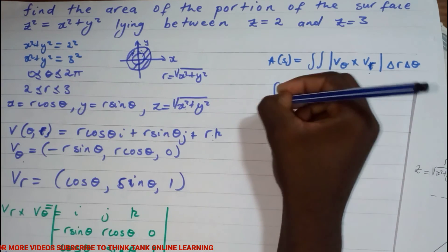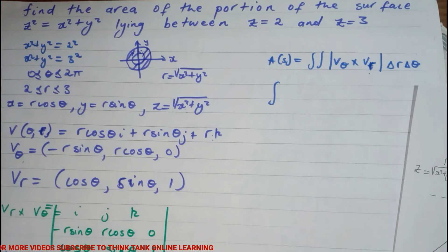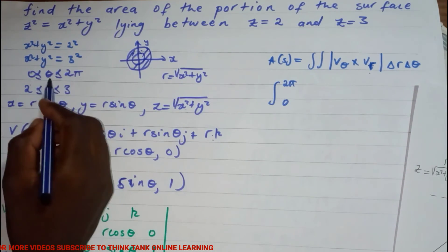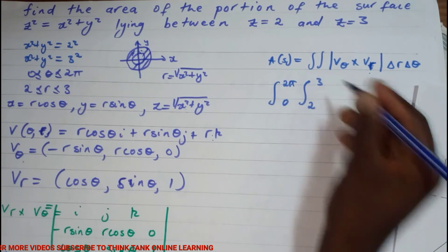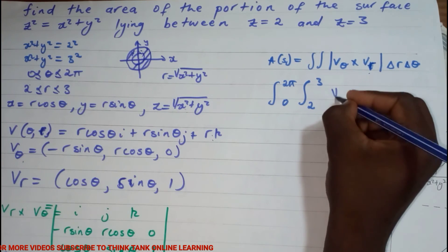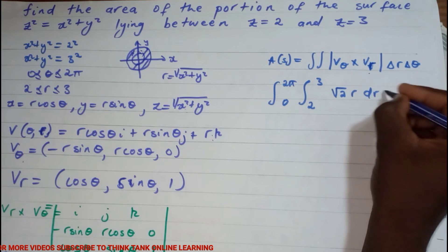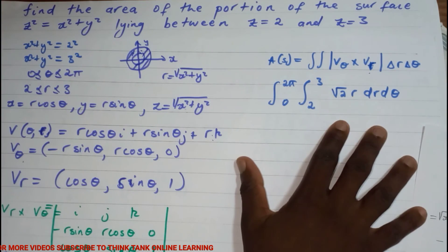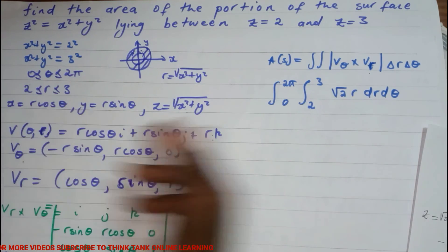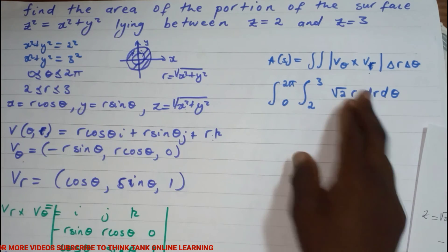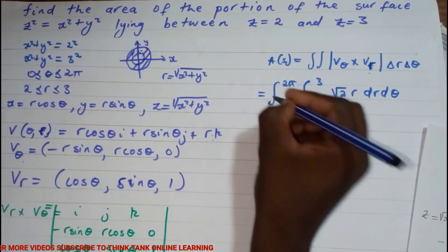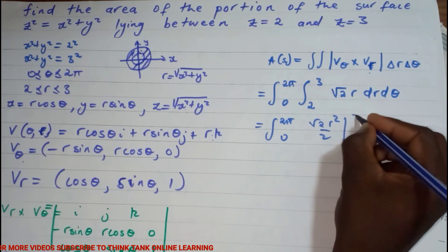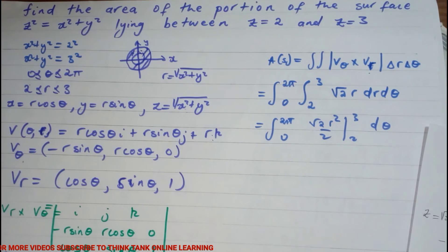Now setting up the integral with our limits: θ goes from 0 to 2π as the outer integral, and r goes from 2 to 3. The cross product magnitude is r√2, so the surface area integral becomes ∫₀²π ∫₂³ r√2 · dr dθ. Note: since we're using parametric coordinates (not polar substitution), there is no extra Jacobian factor r here.